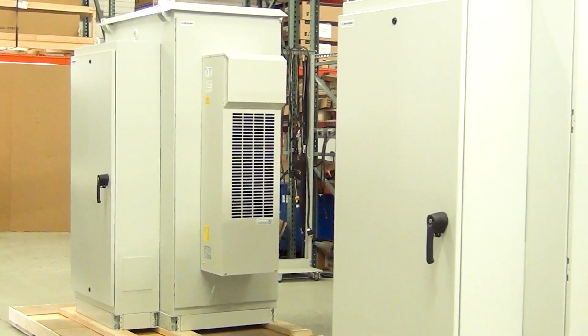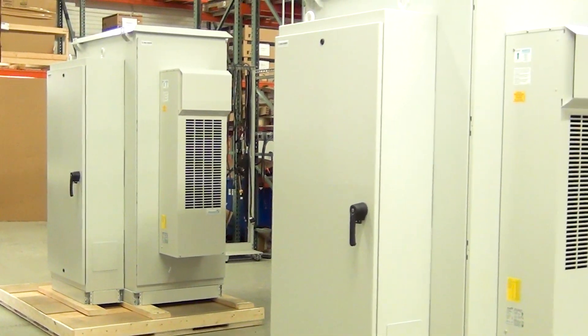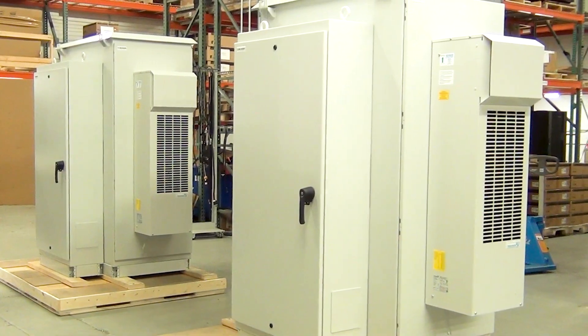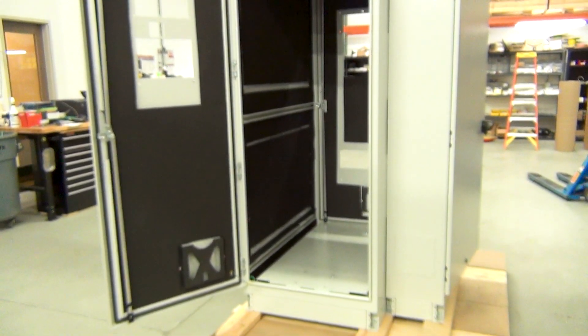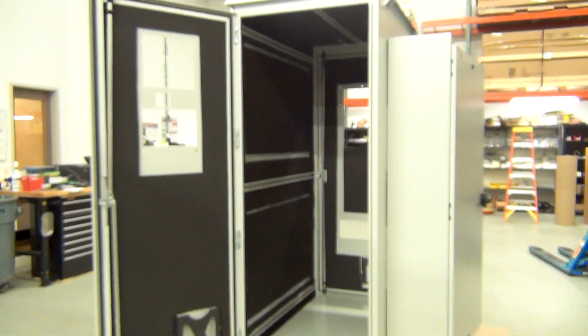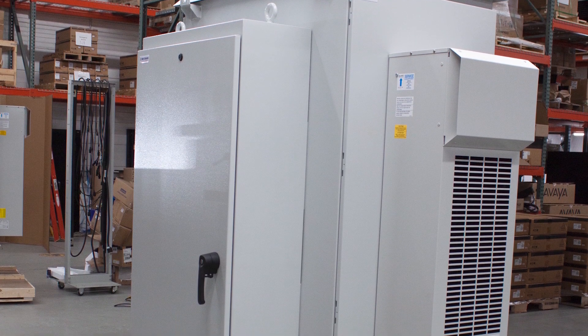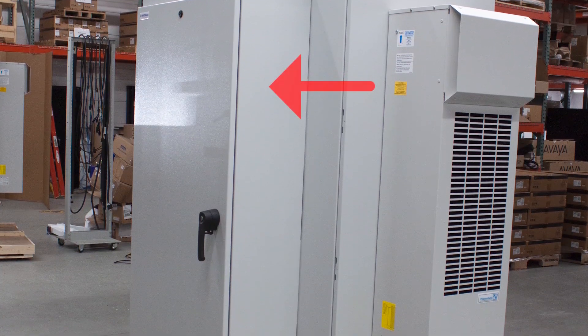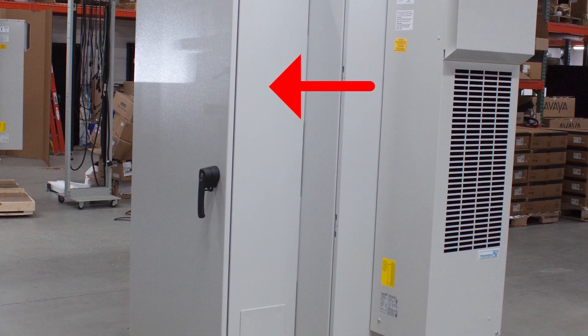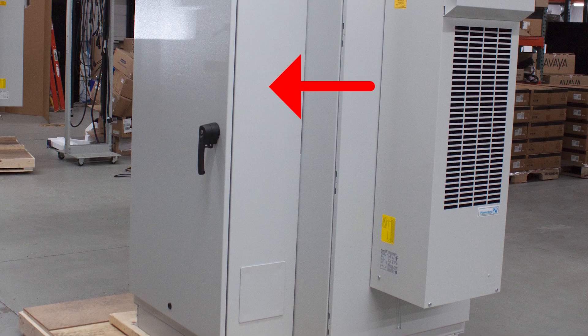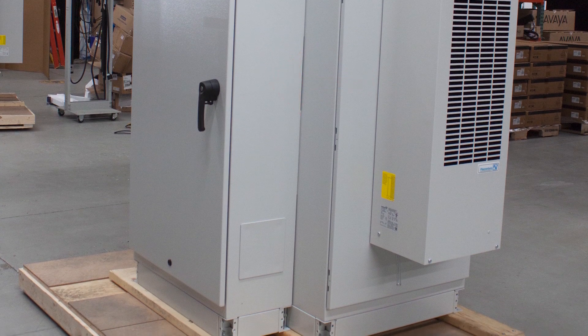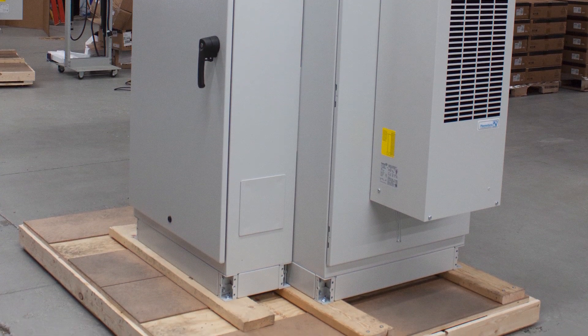Our team started this project with two custom Type 4 sealed enclosures that were built to project-specific dimensions to house a UPS and a standalone enclosure to house the maintenance bypass panel. Having separate enclosures ensures that if the UPS has a failure, the bypass enclosure can be unbolted from the UPS enclosure, then the UPS enclosure can be replaced while the load remains online throughout the replacement process.